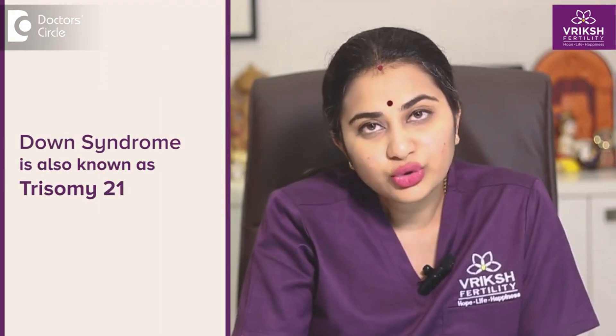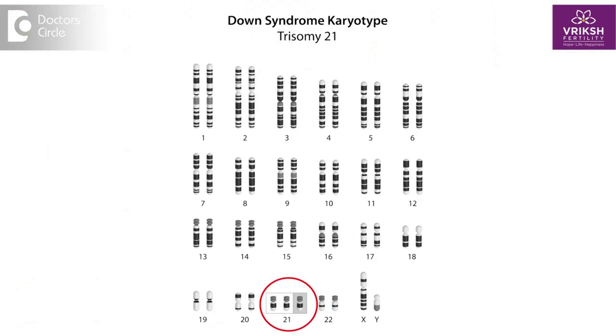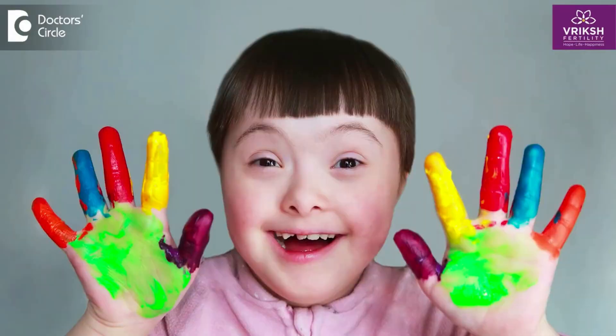Down Syndrome is also known as Trisomy 21. It is characterized by the presence of an extra chromosome on chromosome 21. This additional genetic material alters the course of development, causes certain distinct physical characteristics, and is associated with intellectual disabilities and potential health hazards.